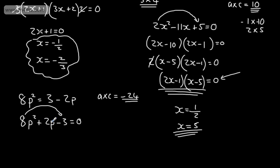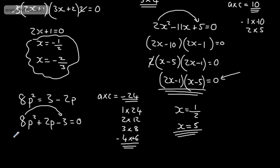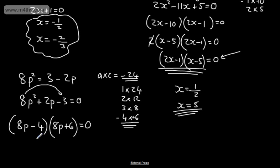We've seen before that if the product is negative, one of the numbers will be negative. So: 1 times 24, 2 times 12, 3 times 8, 4 times 6 — and it's these last two that I want. I'm going to have negative 4 and positive 6. So in the brackets, we're going to have 8P minus 4 and 8P plus 6, equal to 0. I can take a factor of 4 out of the first bracket, giving me 2P minus 1. I can take a factor of 2 out of the second bracket, giving me 4P plus 3, multiplied by 2, equal to 0.